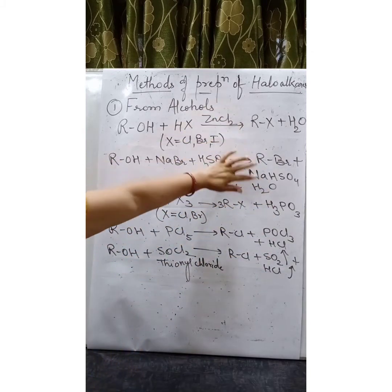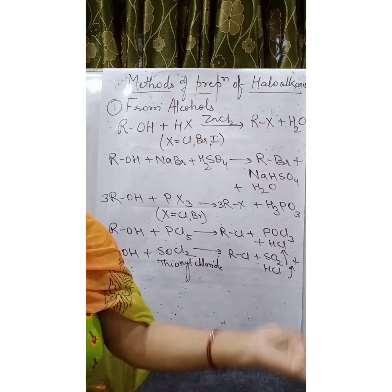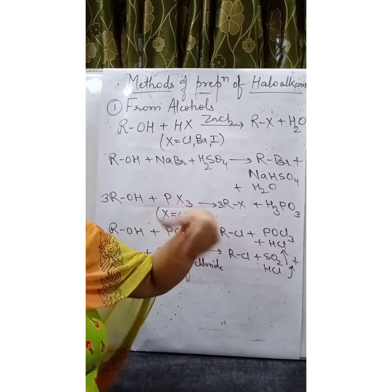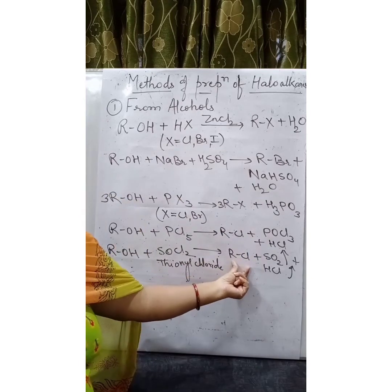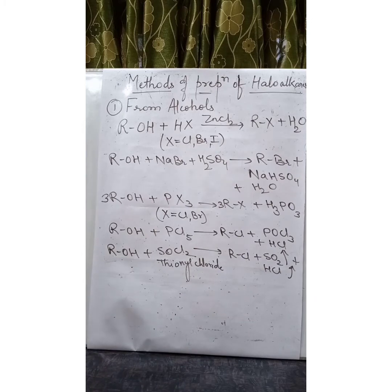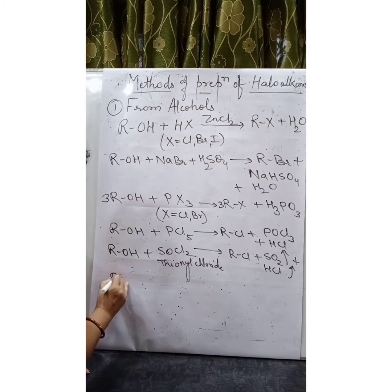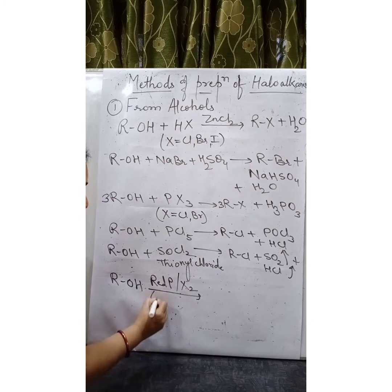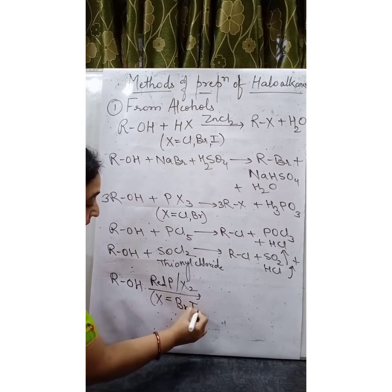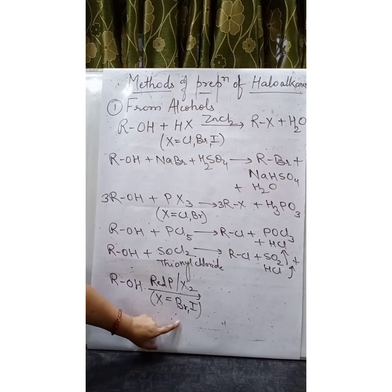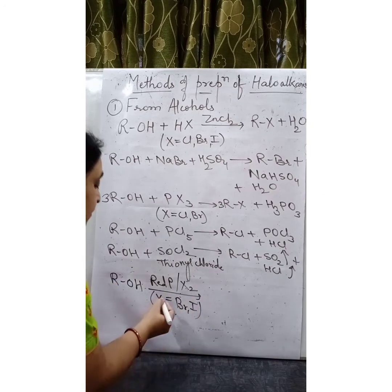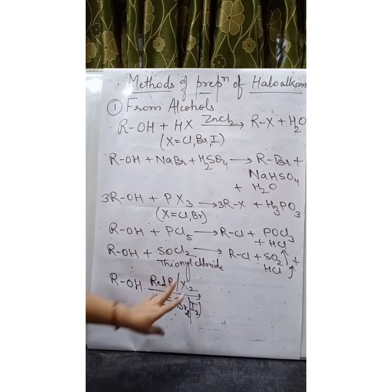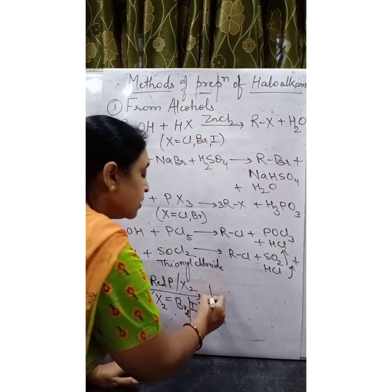The reason thionyl chloride is the best method is that both byproducts — SO2 and HCl — are gases that readily escape into the atmosphere, leaving behind the pure product. In other methods, a mixture of products forms and purification is required. Here, purification is unnecessary because both gases are liberated, leaving behind pure chlorocompound. Additionally, ROH treated with red phosphorus in presence of halogen (X = Br or I, i.e., Br2 or I2) gives RX, allowing preparation of only bromocompounds and iodocompounds.